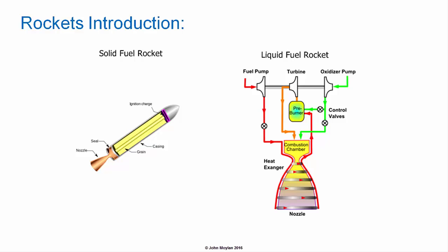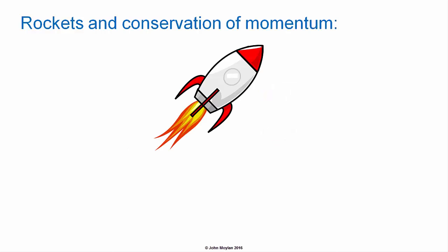In liquid fuel rockets, the fuel and the oxidizer are stored as liquids in separate tanks and pumped into the combustion chamber where burning occurs. In a solid fuel rocket, the fuel and oxidizer are mixed together and packed into a cylinder. Once a solid fuel rocket is ignited, it continues to burn until all the propellant is exhausted.